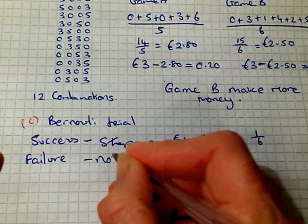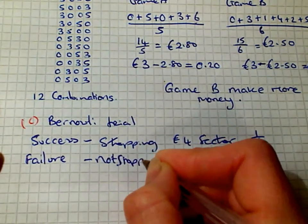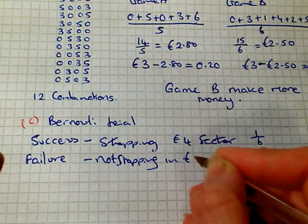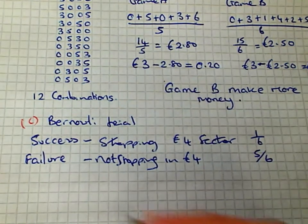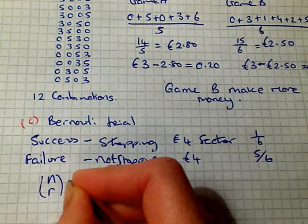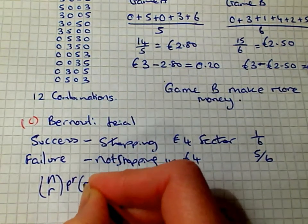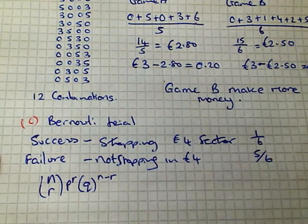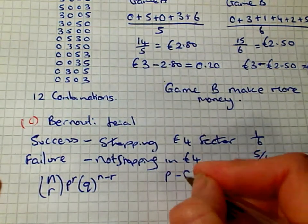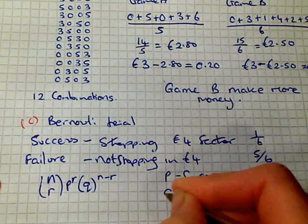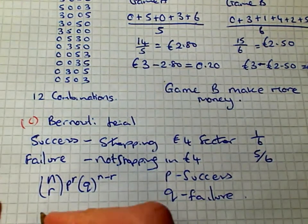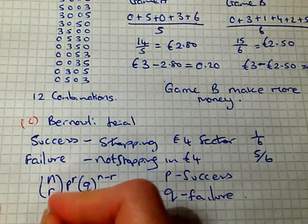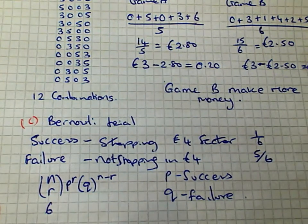The failure is it not stopping in the 4 euros, which is 5/6. Bernoulli trial: n choose r by p to the power of r by q to the power of n minus r. So p is your success and q is the failure.